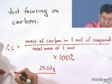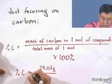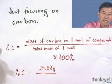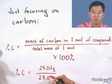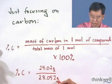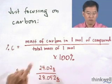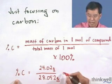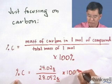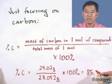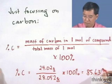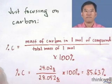And again, this is percent carbon by mass in our ethylene molecule. 28.052 grams is the total mass of one mole of ethylene, and we're going to multiply by 100%. Let's not forget to multiply by 100%, and that gives us 85.63% carbon.